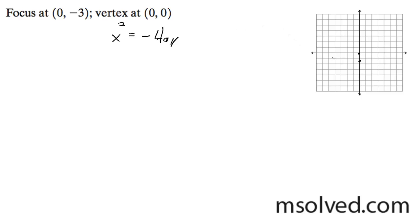a is the distance from the vertex to the focus, which is 3, so this equation is x squared equals negative 12y.